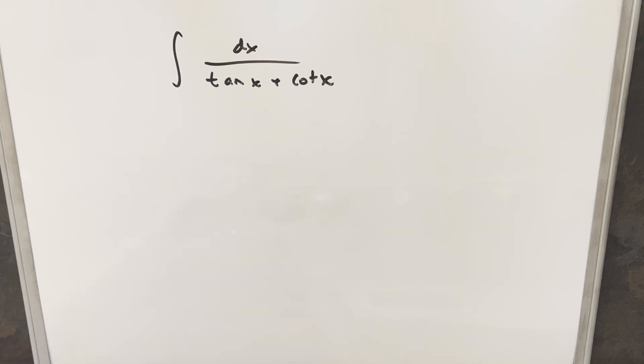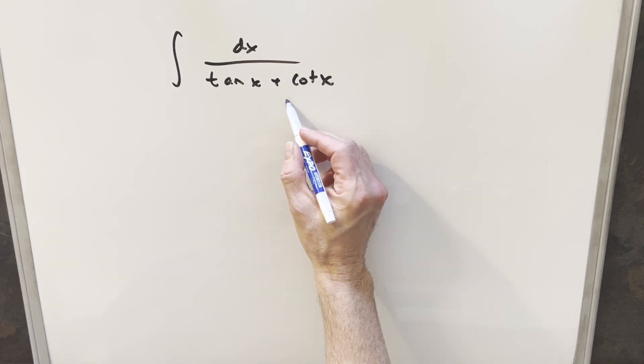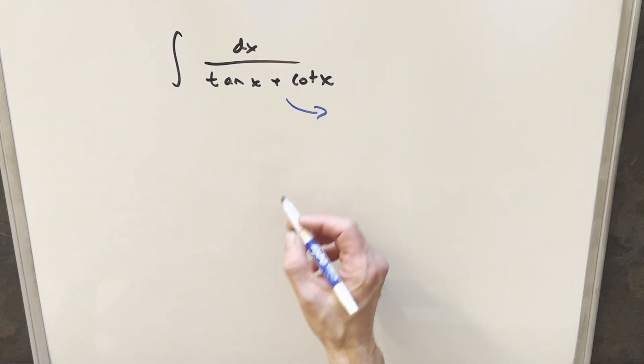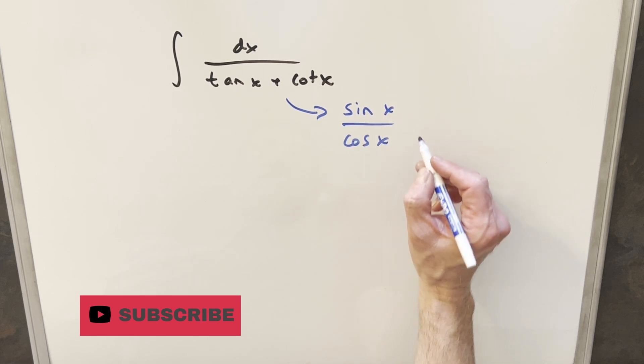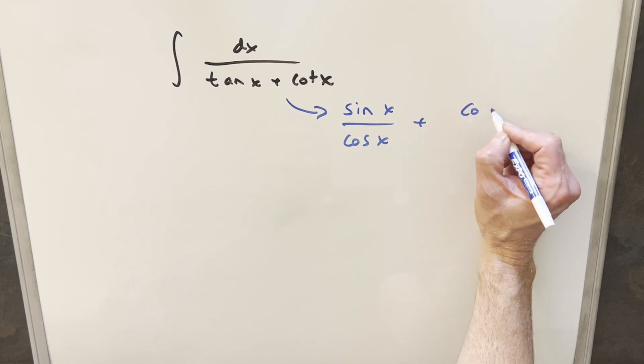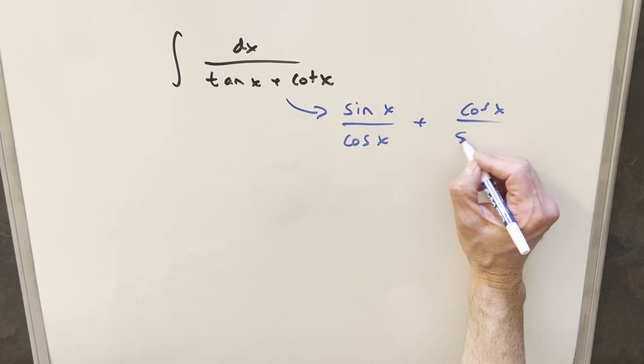Okay, I found this to be a pretty fun problem. What I did to start was I just wanted to rewrite tangent and cotangent in terms of sine and cosine. So for tangent, I'll just write it as sine over cosine. And then cotangent is just the reciprocal, cosine over sine.